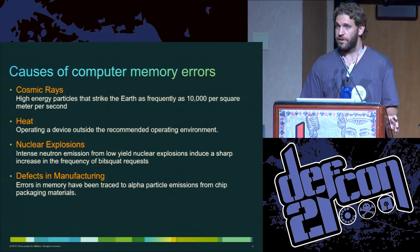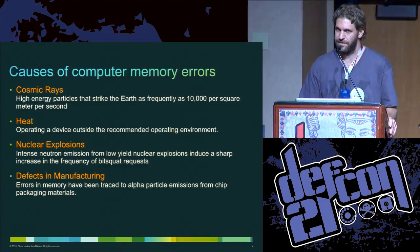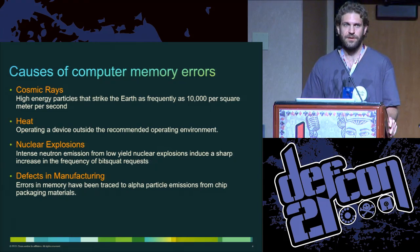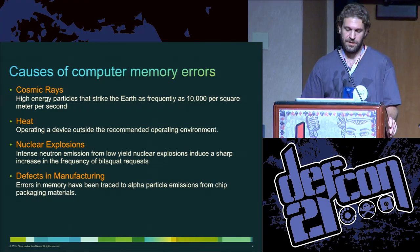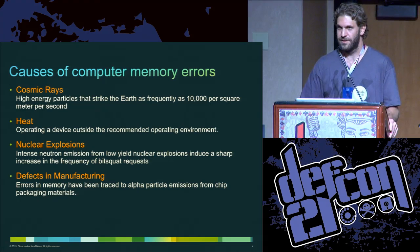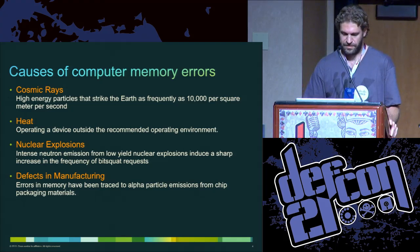He also talked about the main causes of bit squatting errors — bit errors in memory. Cosmic rays hit the earth quite frequently: 10,000 per square meter per second. Heat is another factor — the upper range on the iPhone operating temperature is only 95 degrees, so if you've been carrying your iPhone around Vegas, you've been exceeding those operational parameters. There's also an interesting paper about nuclear explosions and using DNS requests and bit errors to actually determine when low-yield nukes have been exploded. And finally, defects in manufacturing.